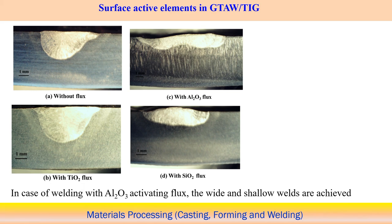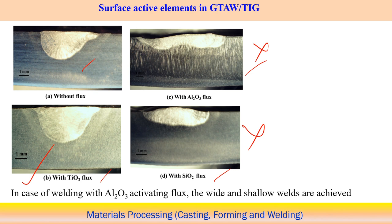As an example of surface active element effects: without flux, one profile is obtained; with Al2O3 flux, TiO2 flux, and SiO2 flux, different profiles result. Each flux has different effects — not all cases show increased depth of penetration, meaning the choice and quantity of surface active elements may not be optimal. TiO2 flux is more effective at increasing depth of penetration. Many experiments are needed to find the optimum quantity of surface active elements to achieve maximum depth of penetration in TIG welding.